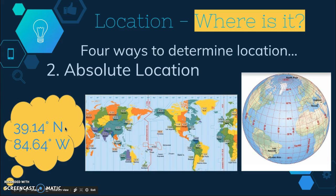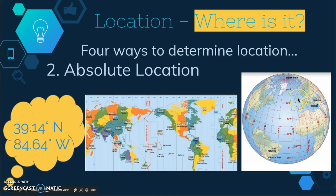Let's talk about the difference between latitude and longitude. Latitude measures degrees north and south from the equator. Anything above the equator is a certain degree north and anything below is a certain degree south — latitude is like a ladder, you go up and down. Longitude starts at the prime meridian, which is zero degrees and runs through Greenwich, England. Longitude is measured in degrees east and west of the prime meridian, going around rather than up and down.